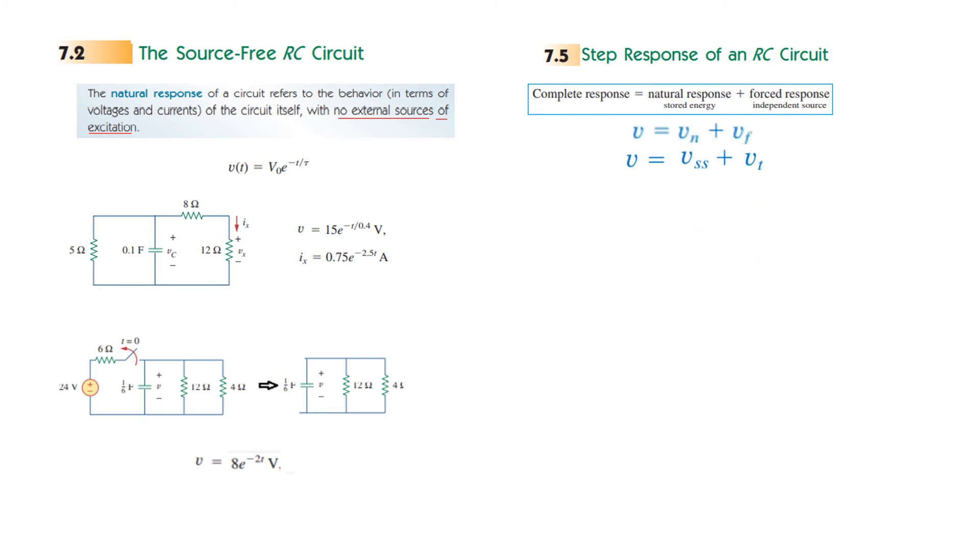Now the key point to understand is that in this circuit, if you look here, there are two sources. One is connected before T equals 0, but after T greater than 0, this portion only still has a source. So any circuit which has a source left in it after T greater than 0...